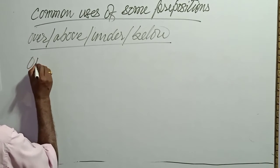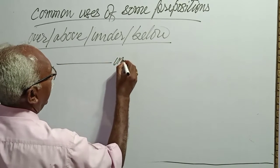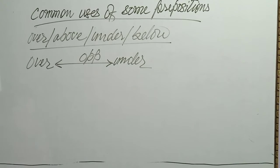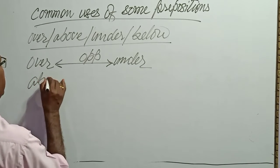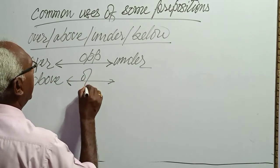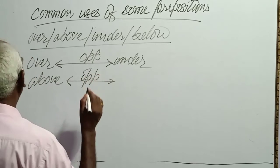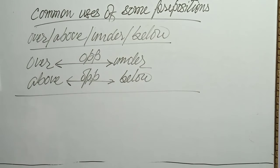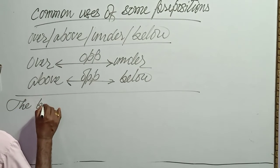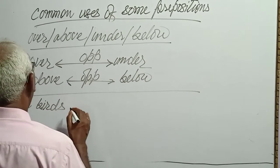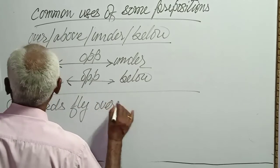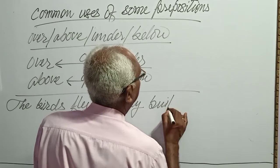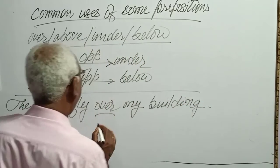Over here, under here, just opposite of each other. Over and above just opposite of below. The birds fly over my building. Building ke upar, ke upar. Over ke upar.